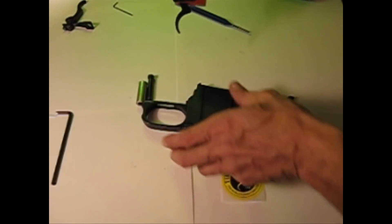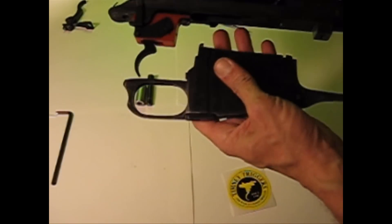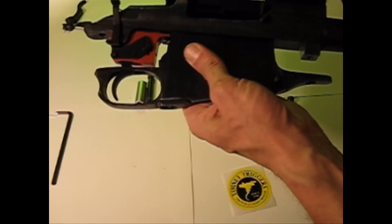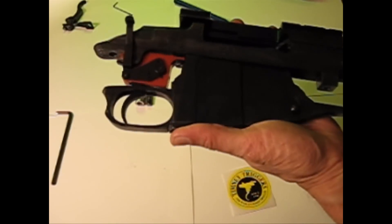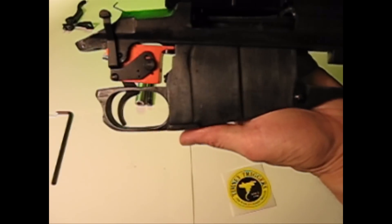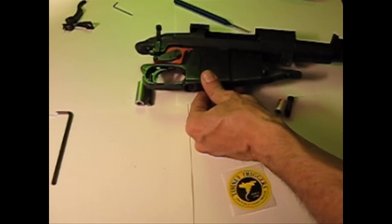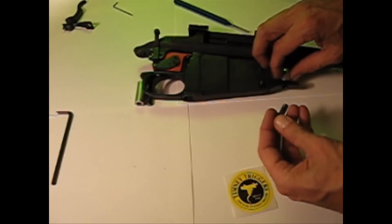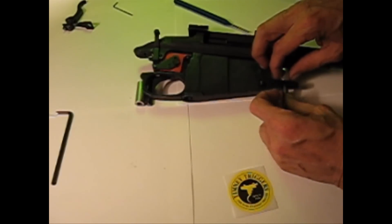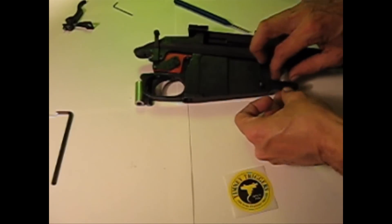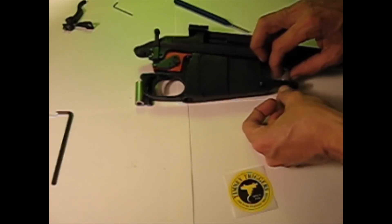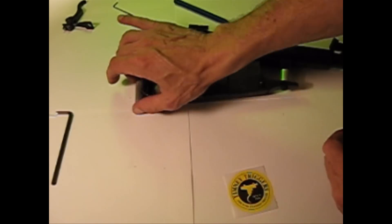Alright, now we go ahead and slap on the lower receiver and trigger guard. Check that for fitting. One of the things I noticed is if you're using a bedding post, you're going to need to notch it.